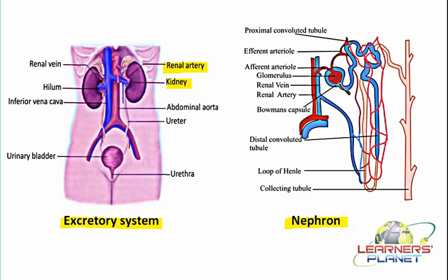The thickness varies from the Bowman's capsule up to further regions, and this variation in thickness allows filtration in the subsequent regions. In the Bowman's capsule, the wall is highly permeable, so the blood is filtered out here. This is possible because the renal arteries have formed capillaries inside — forming a bunch of blood capillaries inside the Bowman's capsule.